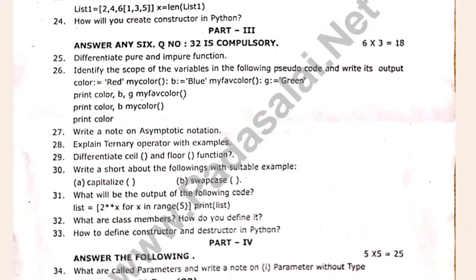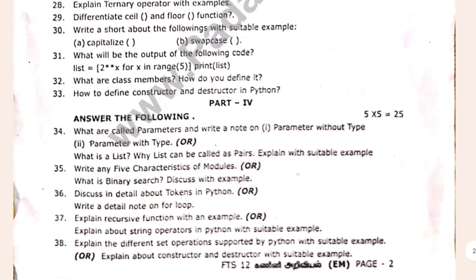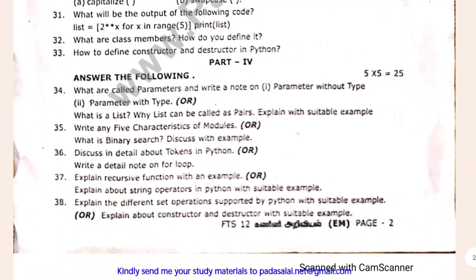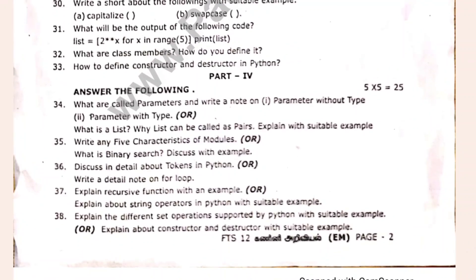Differentiate pure and impure function. Type a pure theory. Write a short note on asymptotic notations. Explain a ternary operator with examples. Type a flow run function. What are the class members and how did you define it? If you want to complete the test, you have to be a class. The parameters with and without type are very important for 5 marks.